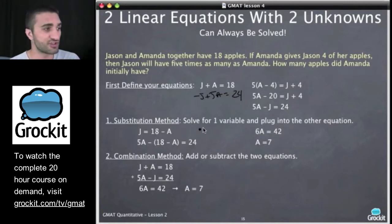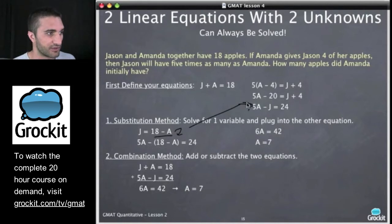So in the substitution method, we solve for one variable and plug it into the other equation. So I could solve in this top equation and make it look like this. J equals 18 minus A. And then I take this whole value and I plug it in for J in this equation that we had over here. And it'll look something like this. So we have, now we have one equation with one unknown. We can just solve for A and A equals 7.